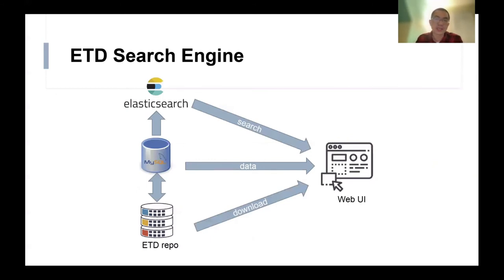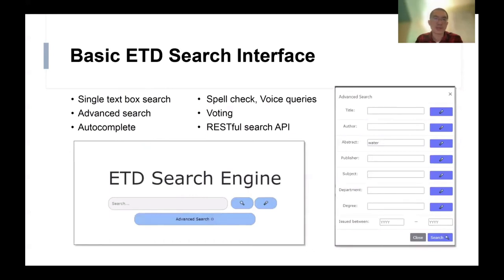We also built an ETD search engine to make ETDs more accessible. The search engine was built on MySQL hosting the metadata, and Elasticsearch was used for indexing the free text and providing the search service, along with the ETD repository containing the files we collected. All of these are accessible from the web UI. Our current web UI provides basic search functions including single text box search, advanced search, autocomplete, spell check, and voice queries. We also allow users to vote on favorite ETDs and add them to lists, and we offer a RESTful search API.